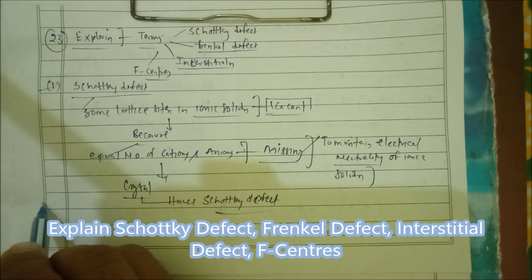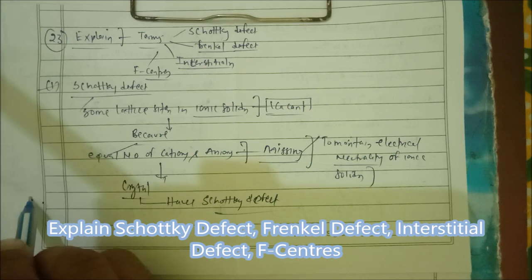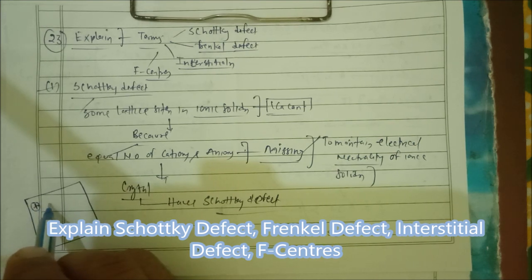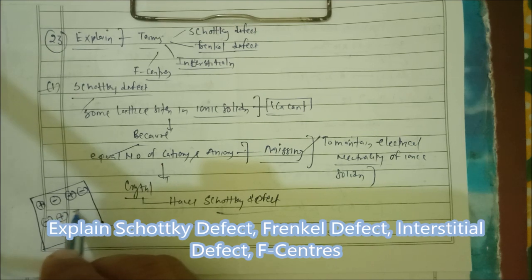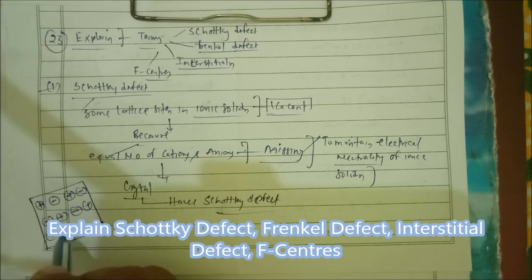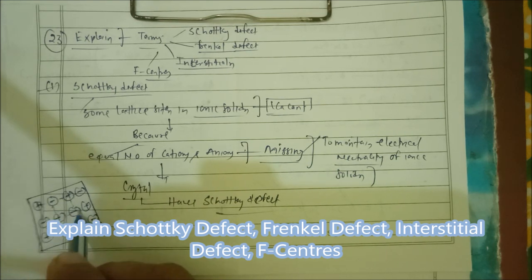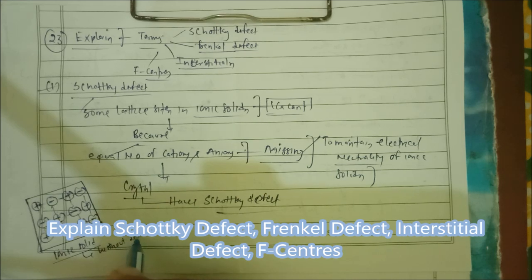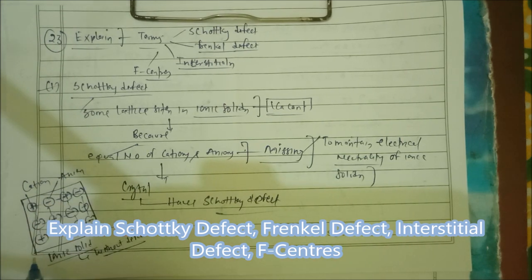If you want to show the ionic solid without defect and the ionic solid with Schottky defect, it can be shown in this way. Let us make a square-shaped structure with positive ions (marked with +) and negative ions (marked with −). This is the ionic solid without defect.